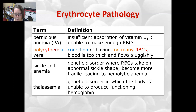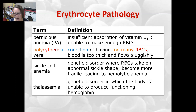In sickle cell anemia, the cells become more fragile, leading to a hemolytic anemia. When the red cells sickle, they get stuck in circulation, become more fragile, and rupture. During a crisis, a lot of this happens at the same time and can cause pain.